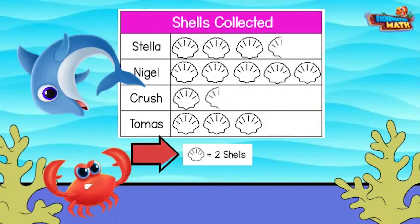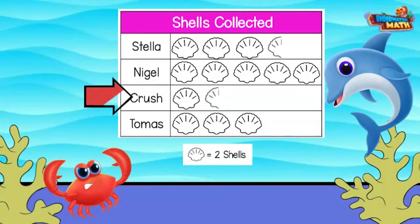When working with pictographs, look to the legend to find out what each picture represents. The legend tells us each shell is worth two. How many shells did the person who found the least number of shells find?